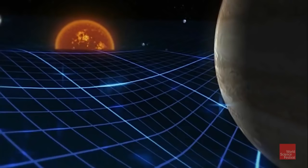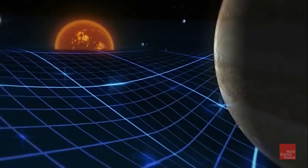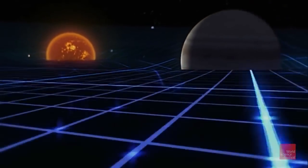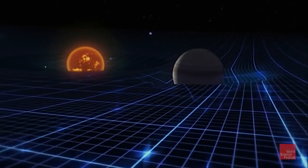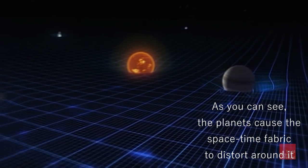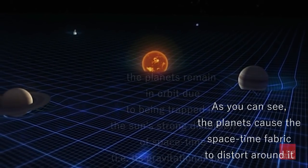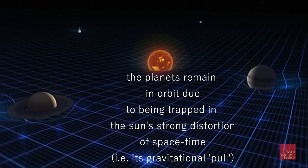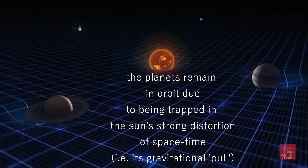So, space is like a sheet made of fabric, according to general relativity. And in the presence of huge masses, this fabric distorts, and any other body to come close to it remains in its strong gravitational pull. And essentially, that's general relativity. That gravity is nothing but warps and curves in space-time.